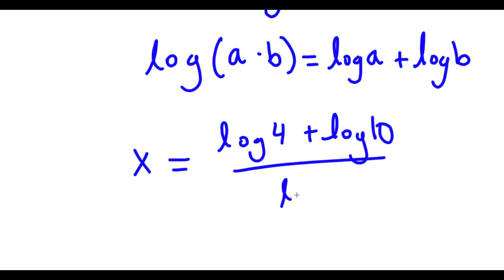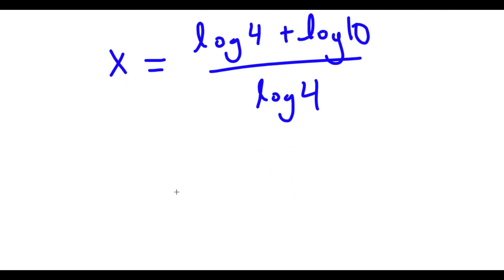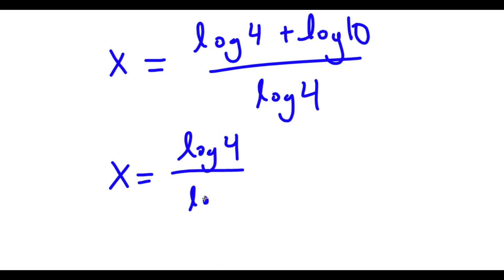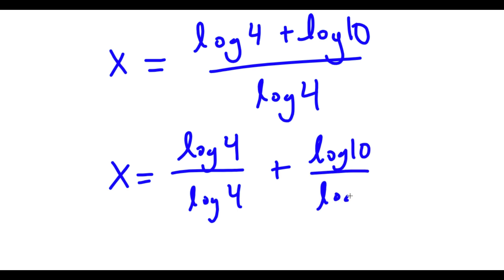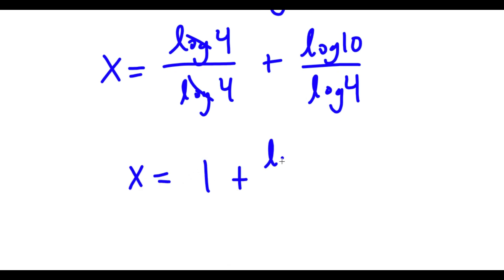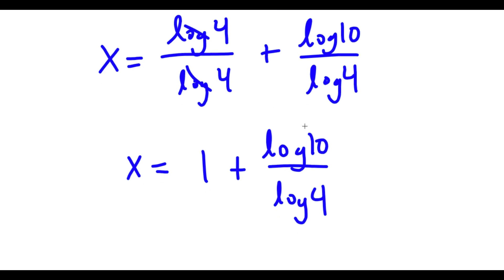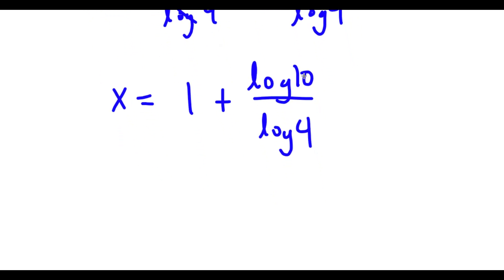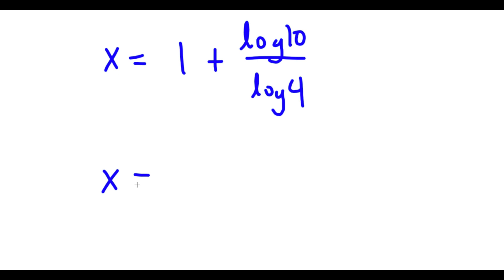Now, log 4 plus log 10 over log 4 is the same thing as log 4 over log 4 plus log 10 over log 4. And log 4 and log 4 cancel out. So now I have x is equal to 1 plus log 10 over log 4. Now, log 10 is the same thing as 1. So now I have x is equal to 1 plus 1 over log 4.